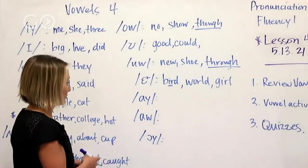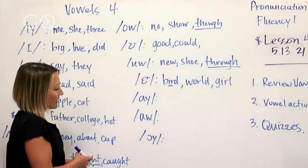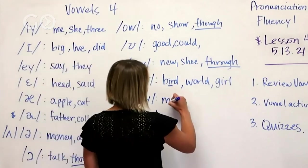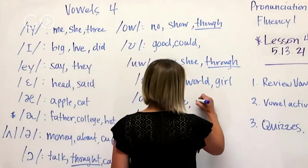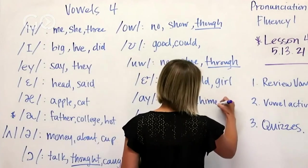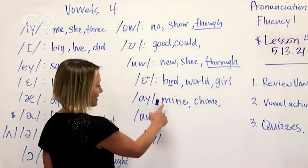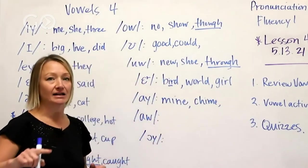I - mine, chime. It's almost got that I - it's called a diphthong, so it's got like ah and e together.